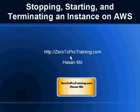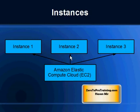Hello, in this session we will talk about stopping, starting, and terminating an instance on Amazon Web Services, known as AWS. This is Hassan Mir from zerotoprotaining.com. Amazon Web Services provides numerous services on cloud infrastructure, and EC2, known as Elastic Compute Cloud, is one of the types of services that Amazon provides.